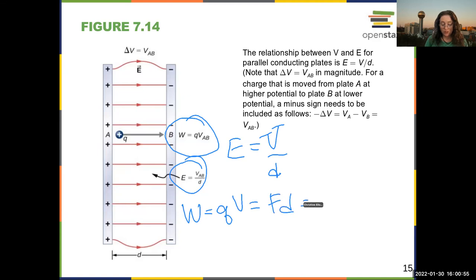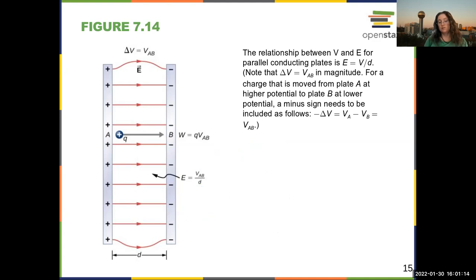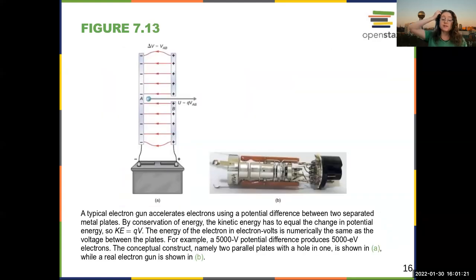which is equal to the charge times the electric field times the distance. So if you compare these two sides of the equation, you get that the electric field is the voltage divided by the distance for the specific case of two parallel plates of charge. This can actually be turned around and made into a useful apparatus.